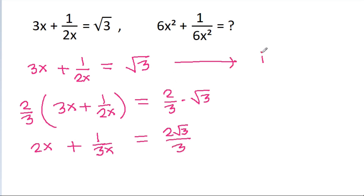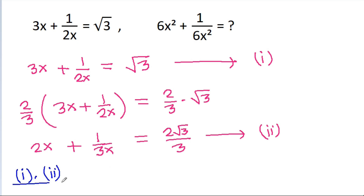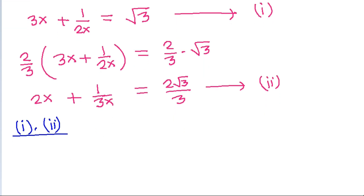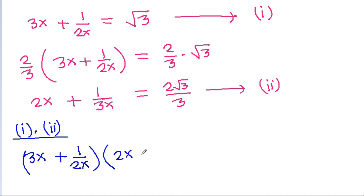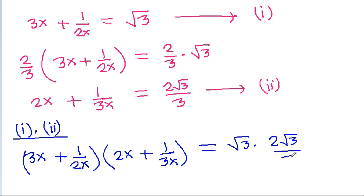Suppose this is equation 1 and this is equation 2. If we multiply equation 1 and equation 2, then equation 1 is 3x plus 1 by 2x and equation 2 is 2x plus 1 by 3x. And on the right hand side, we will get root 3 times 2 root 3 by 3.